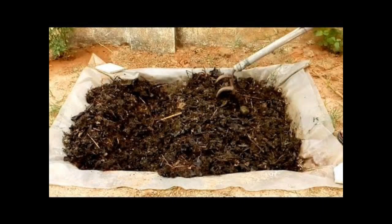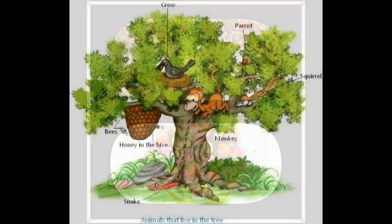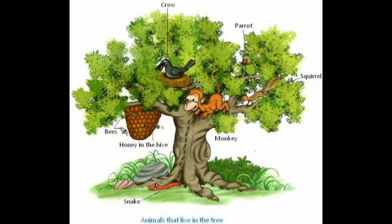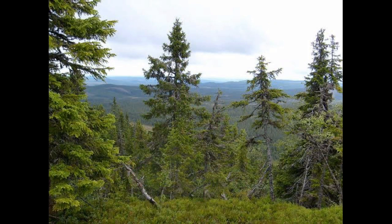Dry leaves of plants are used to make compost, which helps in the growth of plants. Flowers and leaves of many plants are used for decoration and to make bouquets. Plants provide shelter for many animals like monkeys, squirrels, birds, and insects.